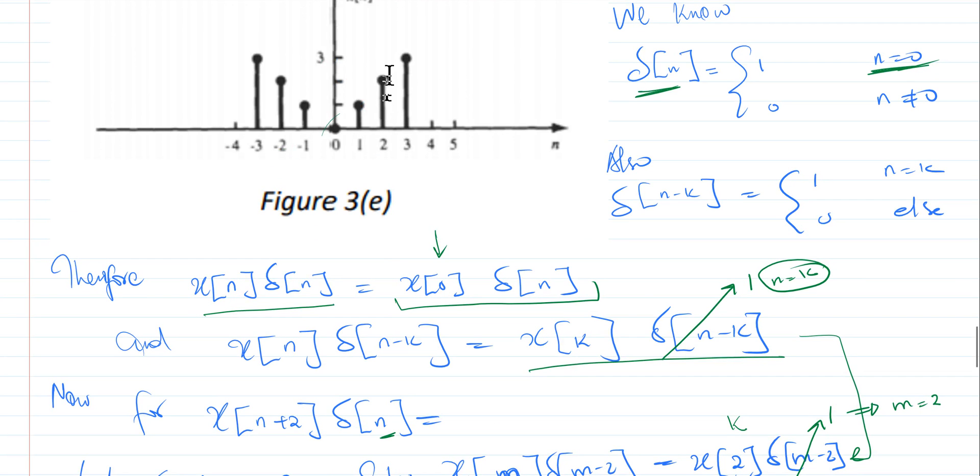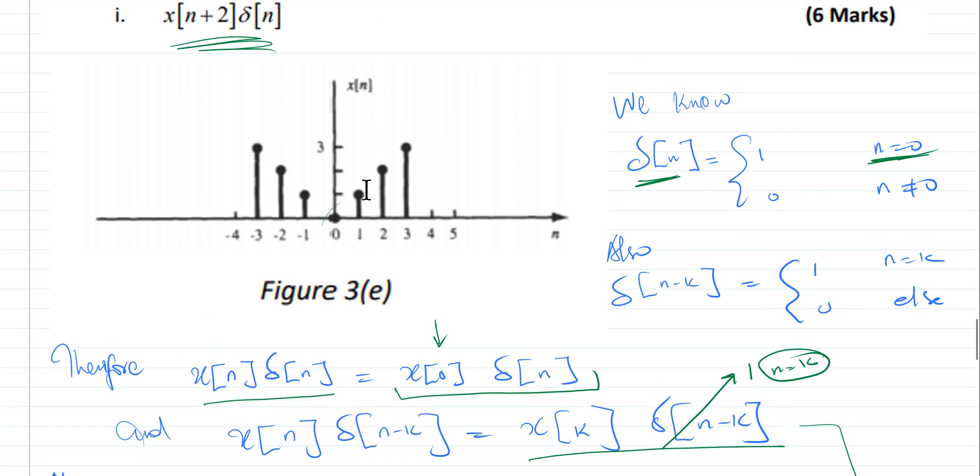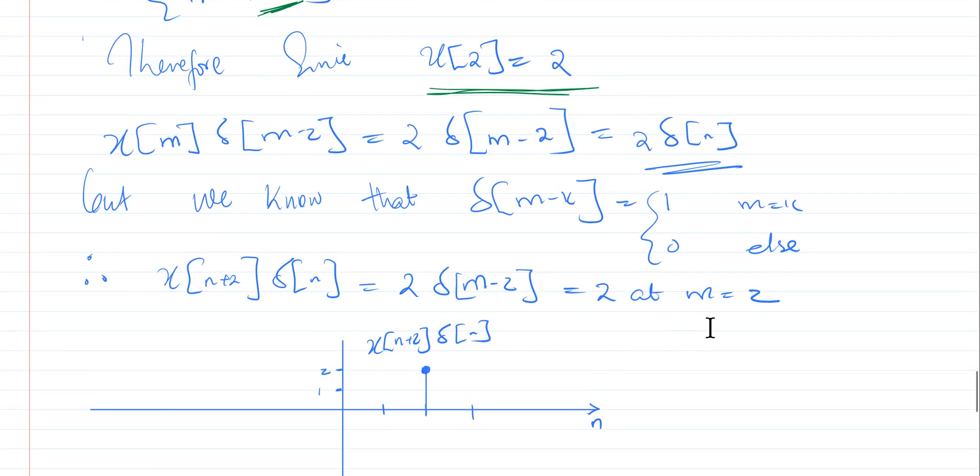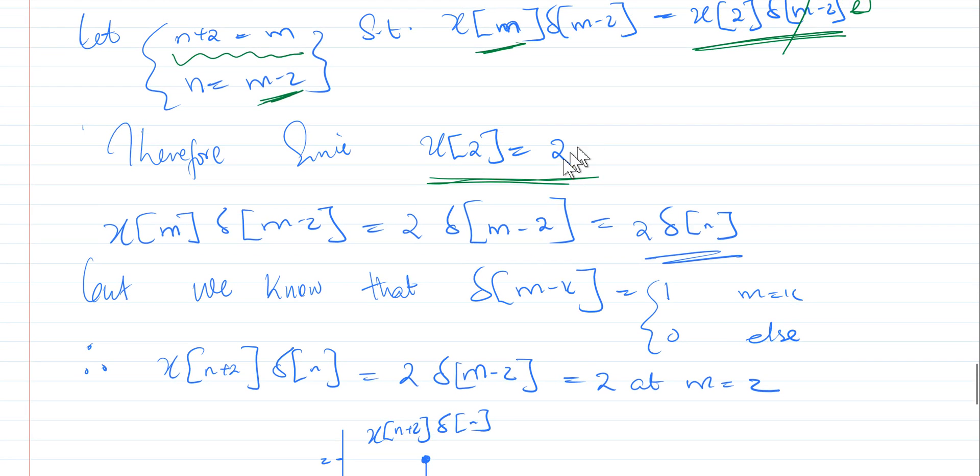x of 2 is simply 2. So these two here, this is 2, this is 1. So once we have seen that x of 2 is 2, then we can simply say that that satisfies our equation. And since we are saying that we are multiplying with a 1 when m is equals to 2, then we can simply say that this is our final value.